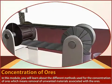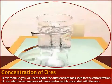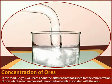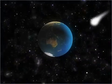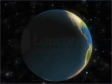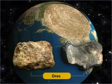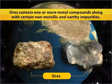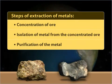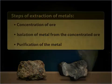Concentration of Ores. In this module, you will learn about the different methods used for the concentration of ores, which means removal of unwanted materials associated with the ores. Minerals from which metals can be extracted conveniently and economically are called ores. Ores are found in the earth's crust and contain one or more metal compounds along with certain non-metallic and earthy impurities. The extraction of a metal from its ore involves several physical and chemical processes such as the concentration of ore, isolation of metal from the concentrated ore, and purification of the metal. All these processes are collectively referred to as metallurgy.